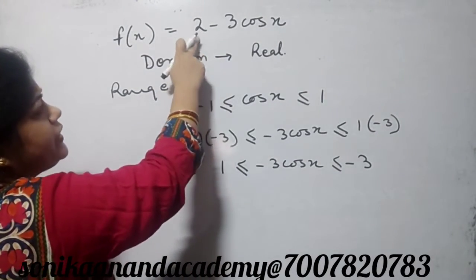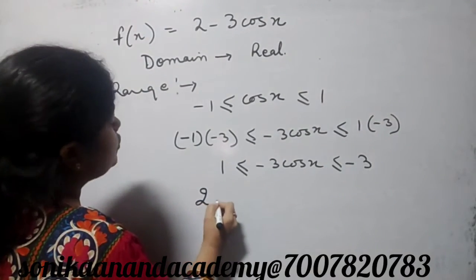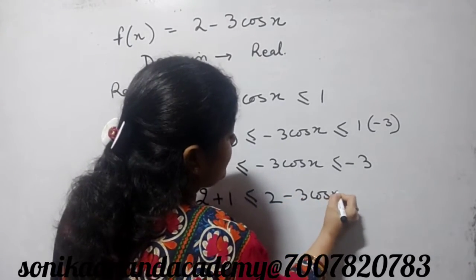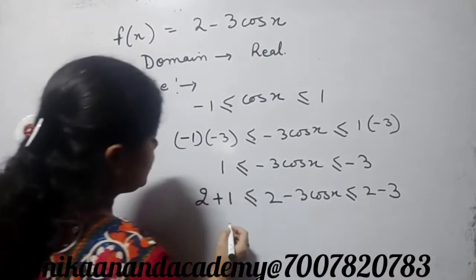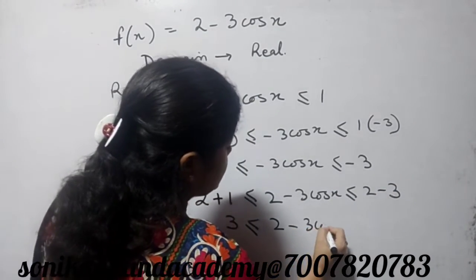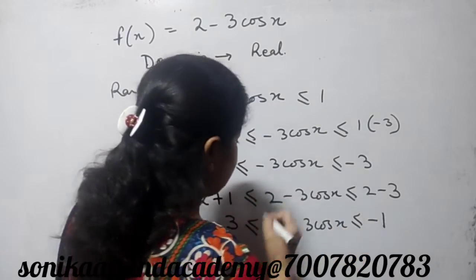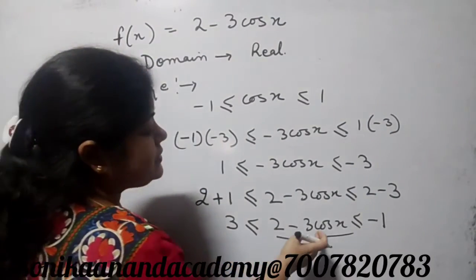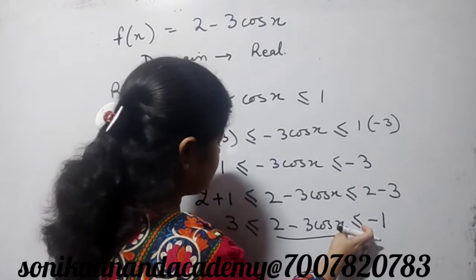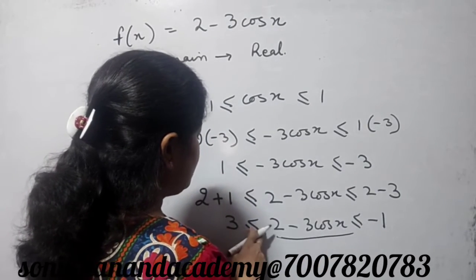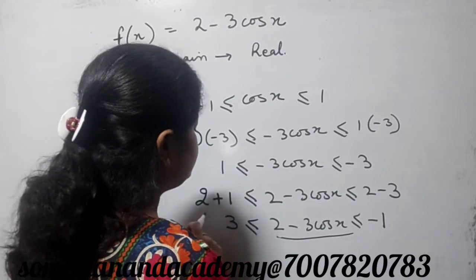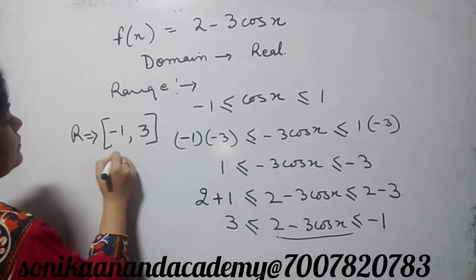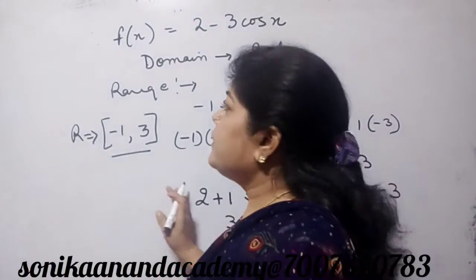Now we add 2 to all sides: 2 plus 1 gives 3, here we have 2 minus 3 cos x, and 2 minus 3 gives minus 1. So this value of the function lies between minus 1 and 3. That is, it must be less than or equal to minus 1 or its value is greater than or equal to 3. So its range is from minus 1 to 3. In this way we find the range of different trigonometric functions.